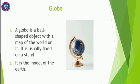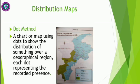A globe is a ball-shaped object with a map of the world on it. It is usually fixed on a stand. It also represents the earth, but it is a model of the earth. A globe is just like a huge model of the earth which represents the earth.